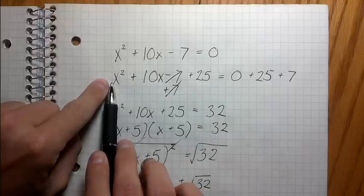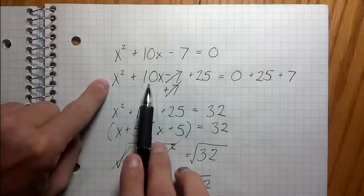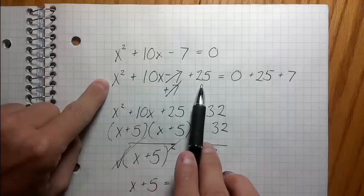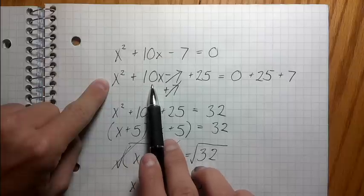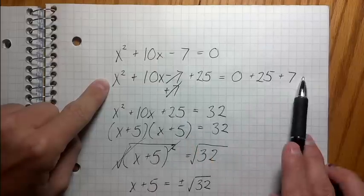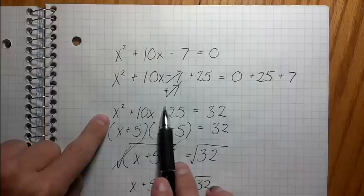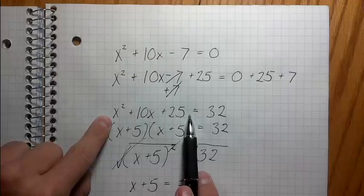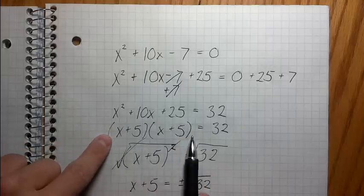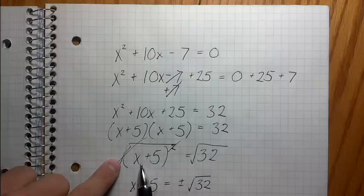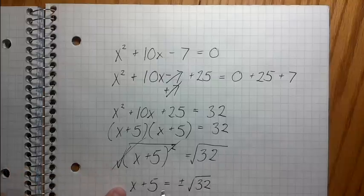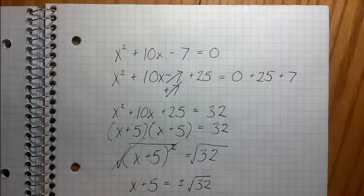So what I did was I took half of this 10, I took half the middle coefficient and I squared it and then I added it to both sides. So I went half of 10 is 5, 5 squared is 25, plus 25, plus 25, and I got rid of this number here because I don't want it over here. I just want this 25 to be here because 25 was the specific number that I could have added to this x squared plus 10x to turn it into a perfect square that I could then factor into this x plus 5, x plus 5, which then I could rewrite as x plus 5 squared, which then I could take the square root of to get root 32 and get this x by itself by just subtracting the 5 from both sides.